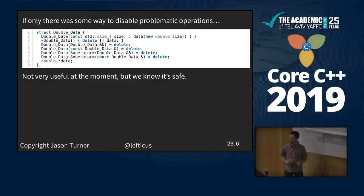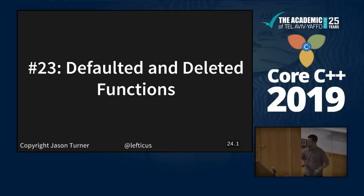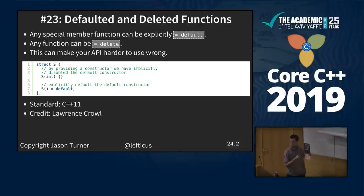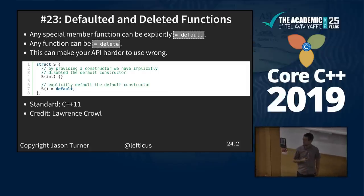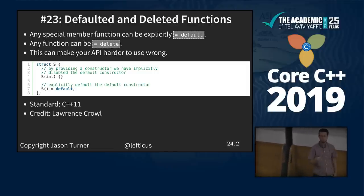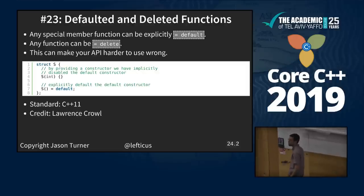Delete. Not very useful at the moment with this code, but we know it is safe. Non-copyable, non-movable types actually do have a use. Defaulted and deleted functions: any special member function can be explicitly defaulted, any regular function can be deleted. This can make our APIs hard to use wrong. For example, you can explicitly delete the overload that takes a const char* if you really need a string, or delete the overload that takes a double if you've got problematic conversions between doubles and floats.